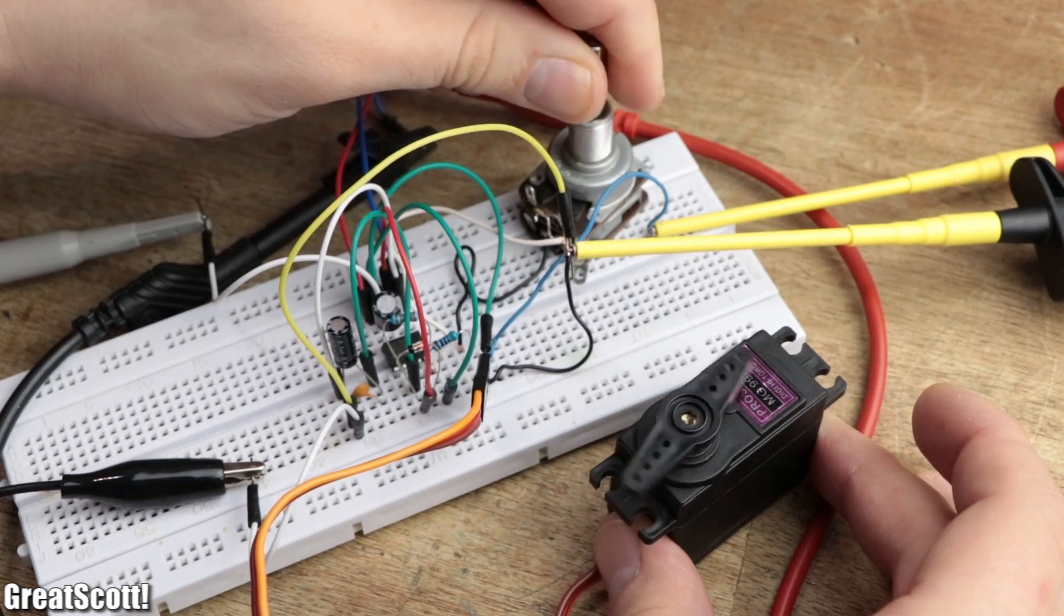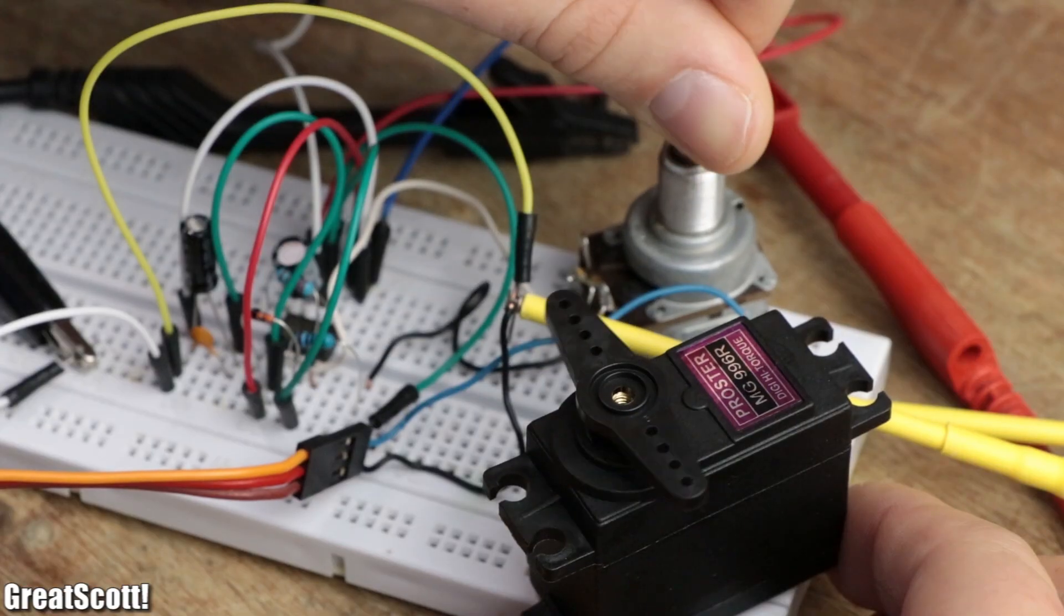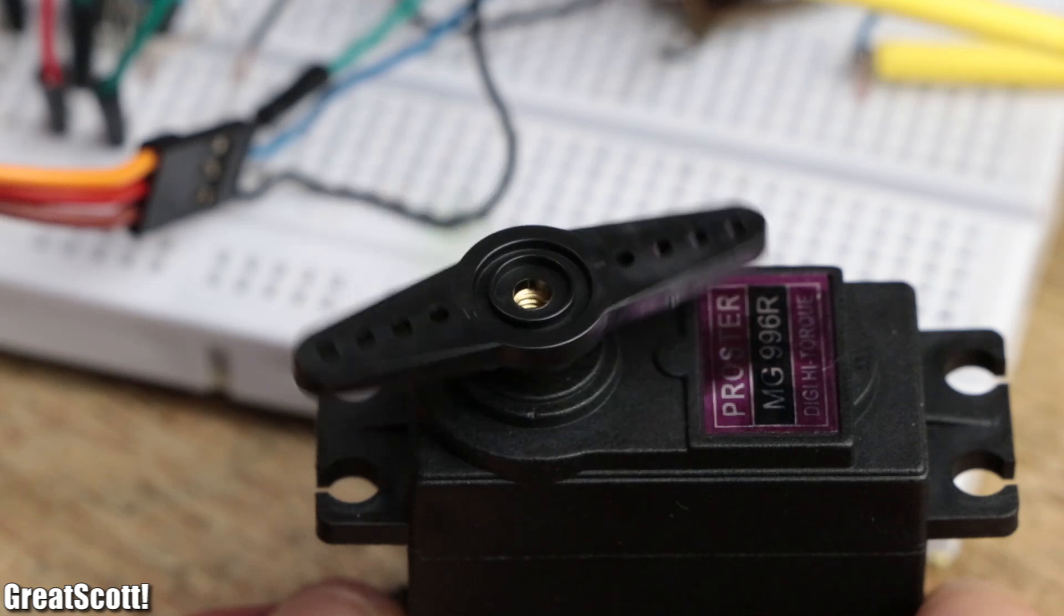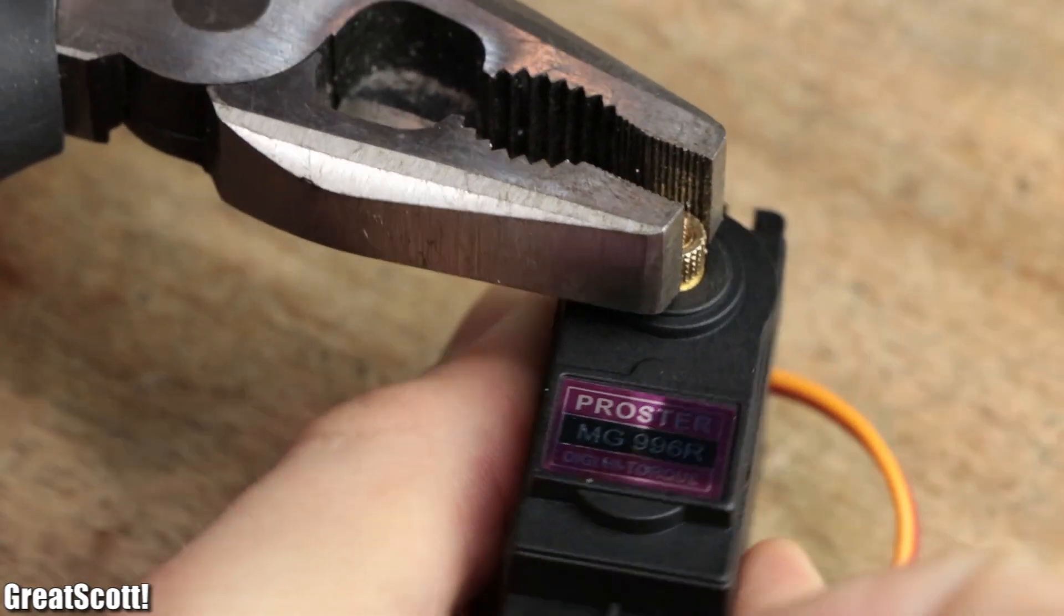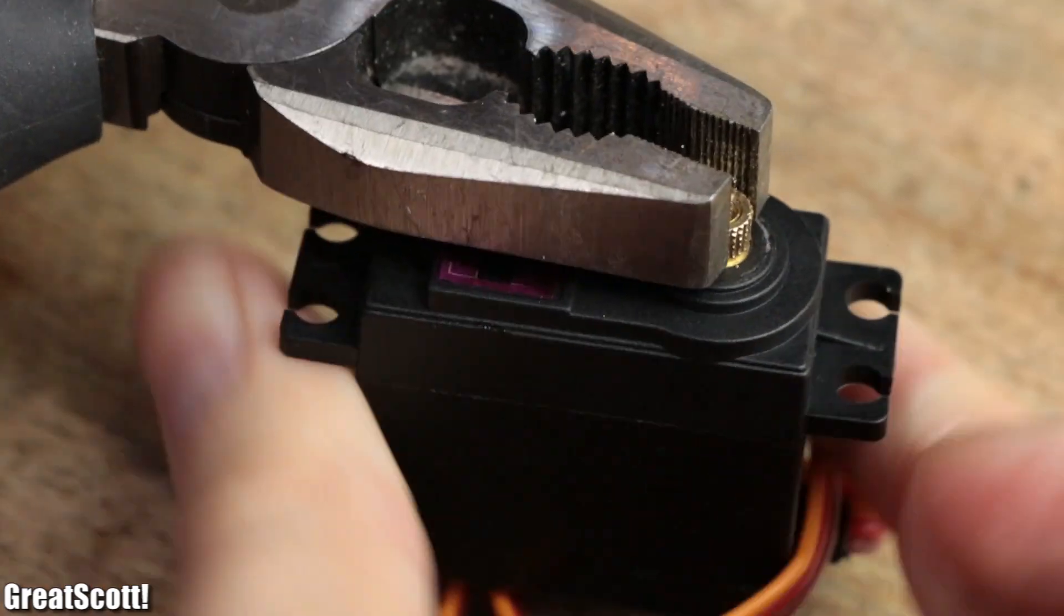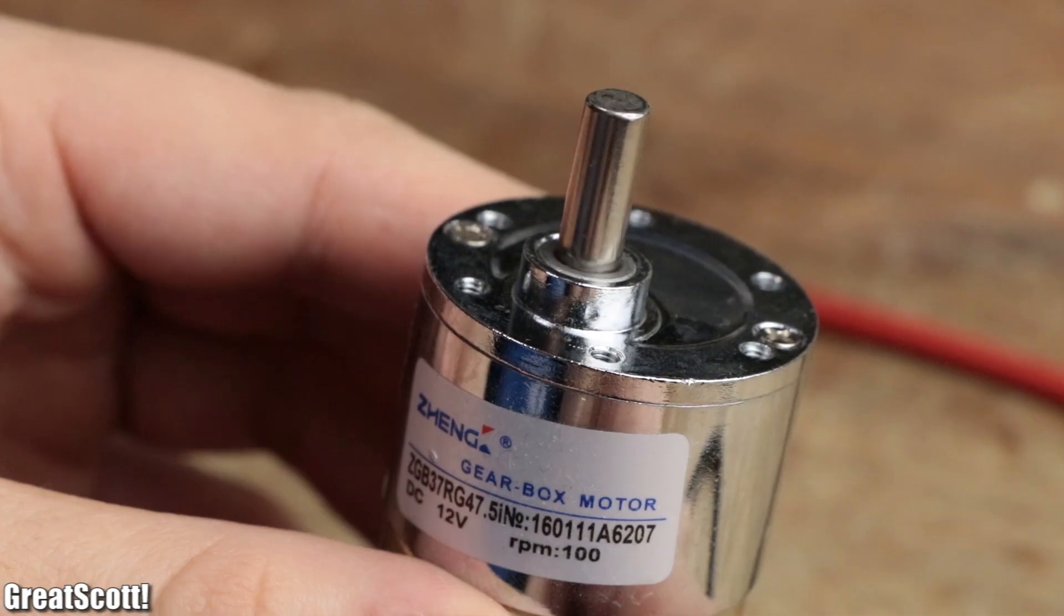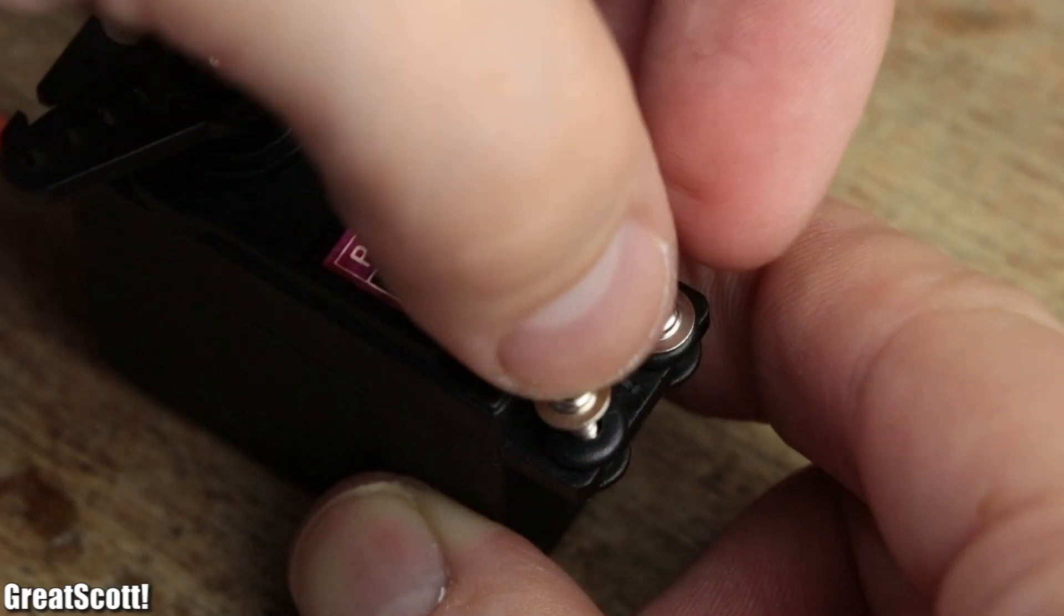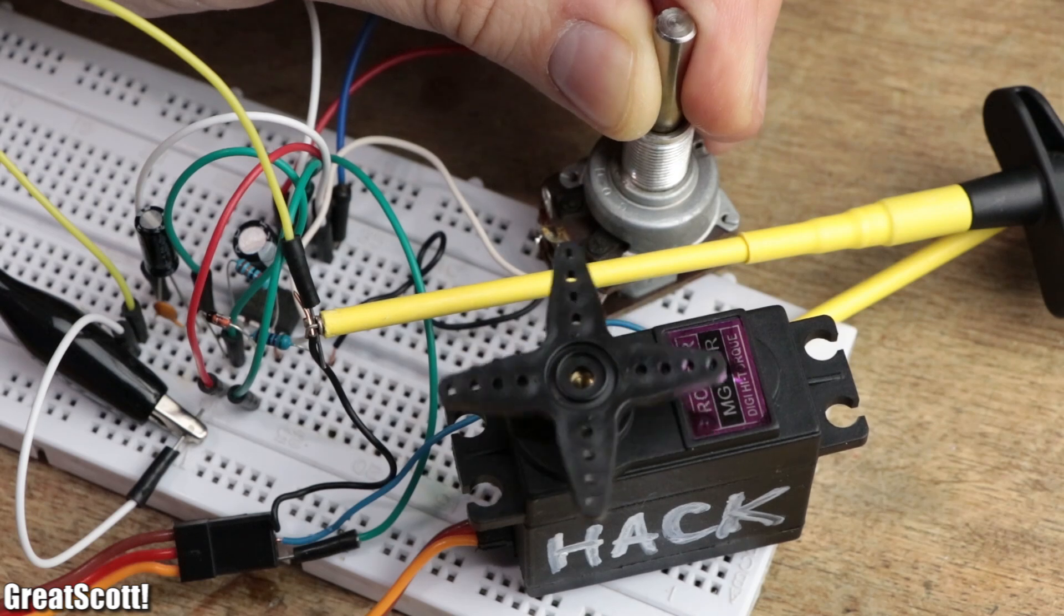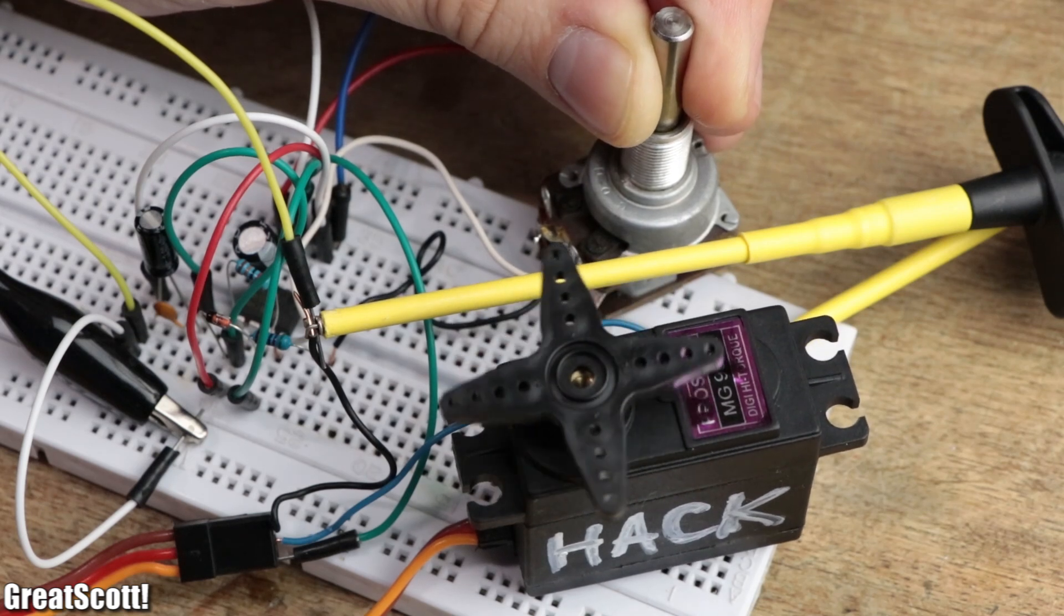But let's say you need a servo that rotates 360 degrees, essentially like a normal motor does. You could simply use a geared DC motor, but your project would work best with the easy to mount servo. No problem. Here is an easy hack on how to do that.